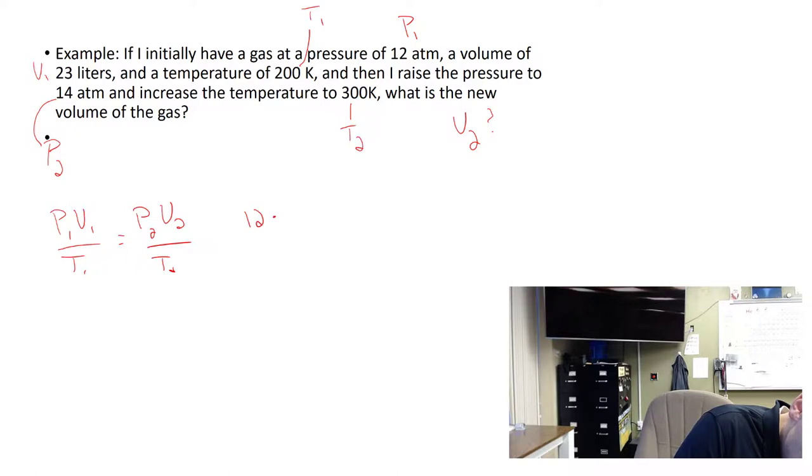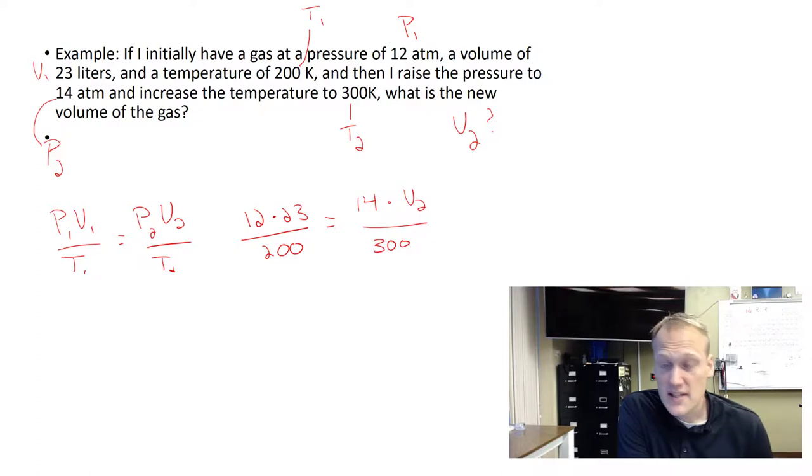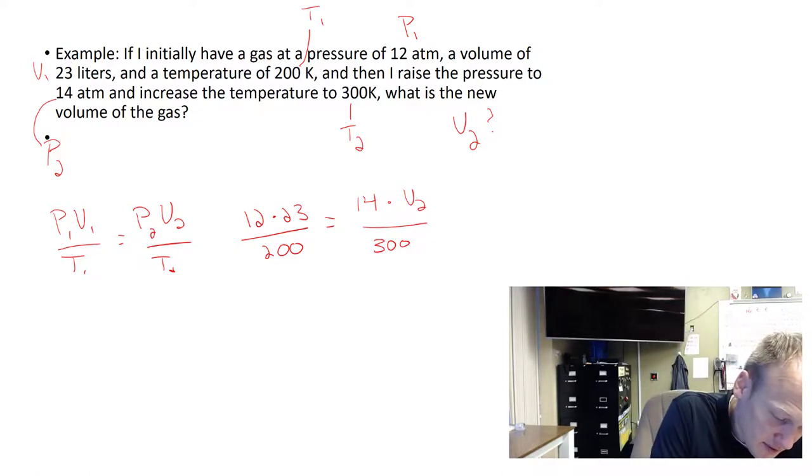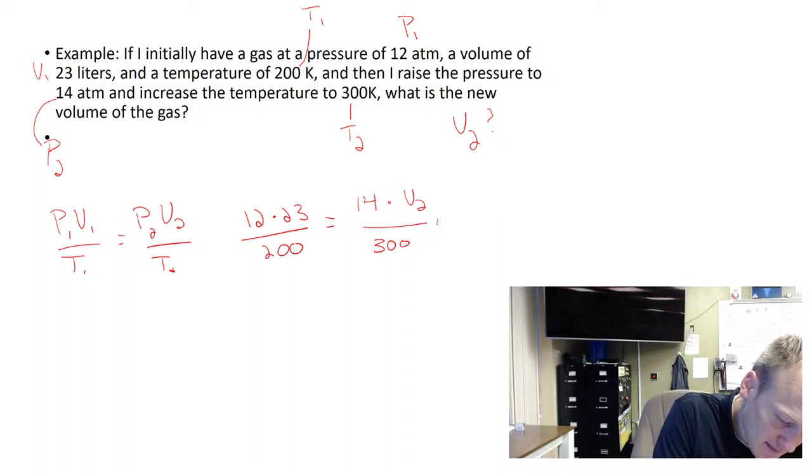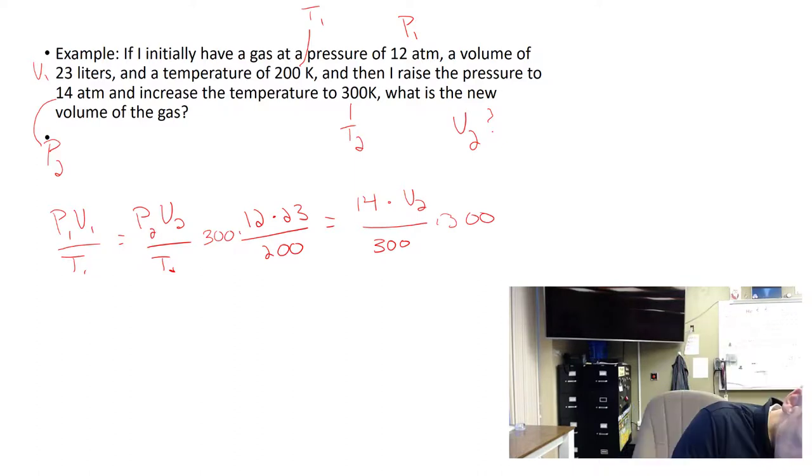12 times 23 over 200 equals 14 times V2, which we don't know, over 300. I'm going to cross multiply this 300 first to the other side and calculate what I know, and that gives me 414 equals 14 V2, because these cancel out.